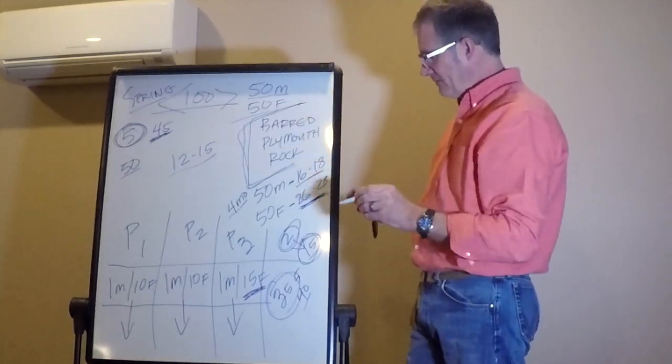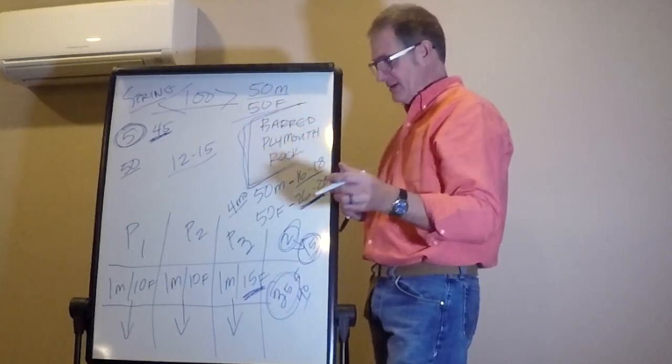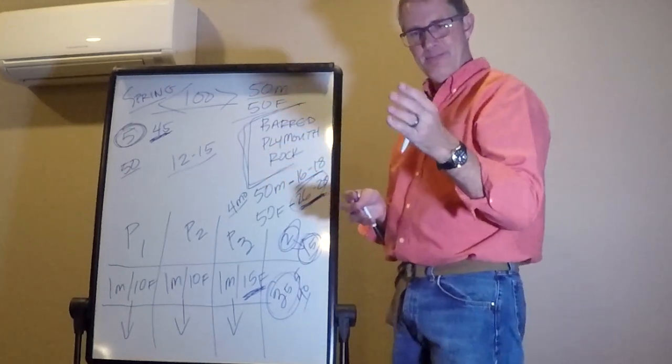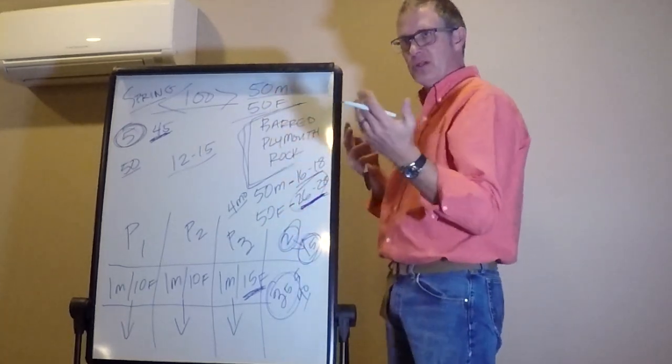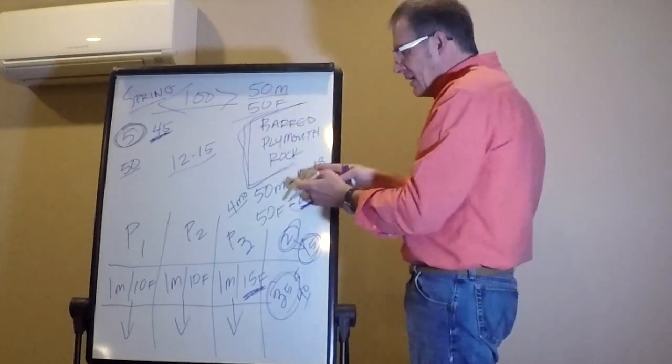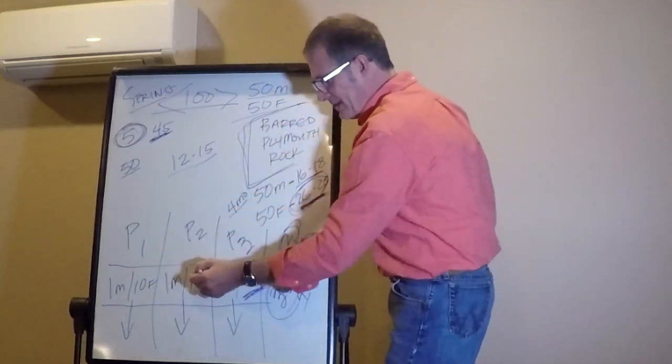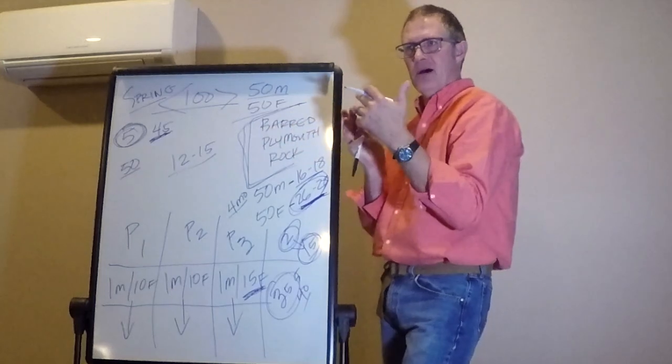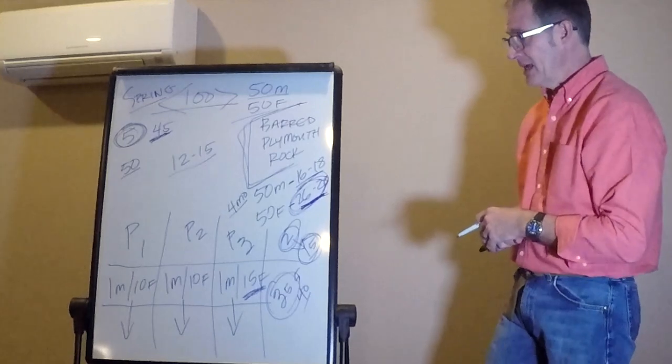The reason I'm waiting 26 to 28 weeks on the females is because I want these birds to be finished growing. You remember a hen stops growing when she starts laying eggs. This is about when I hope she'll start laying eggs. That's when I want to select these birds, when they are finished growing and they start into production so I can do a complete assessment on what those females look like.